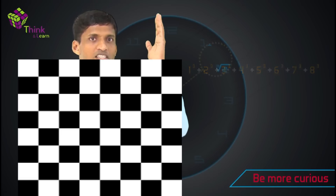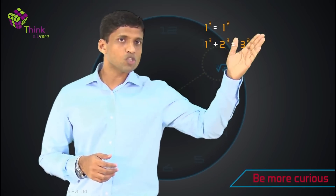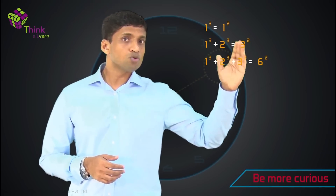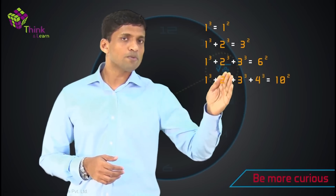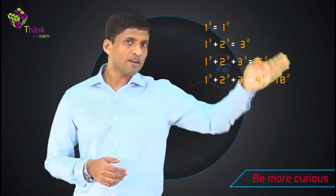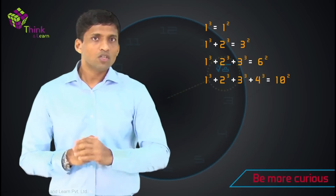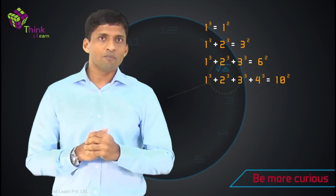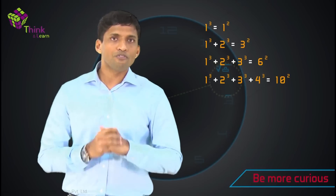Now what is the pattern? We discussed that 1 cube is 1 squared, 1 cube plus 2 cube equals 3 squared, 1 cube plus 2 cube plus 3 cube equals 6 squared, and 1 cube plus 2 cube plus 3 cube plus 4 cube equals 10 squared. Now these are squares of triangular numbers. So how these two are related and can be connected using a diagram is what we are going to do first.